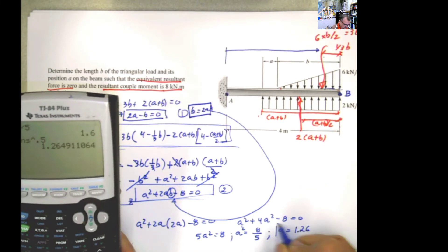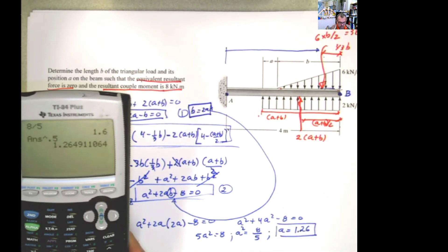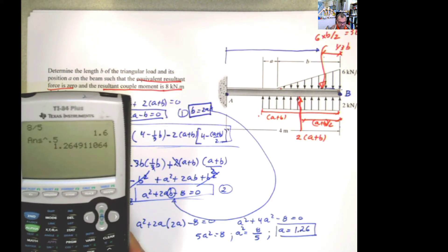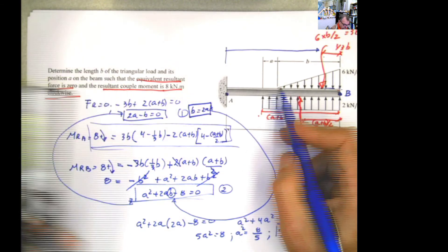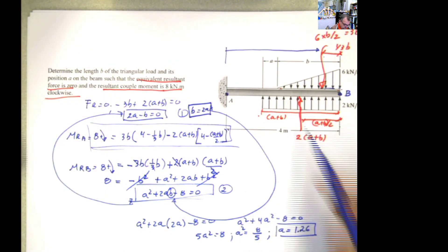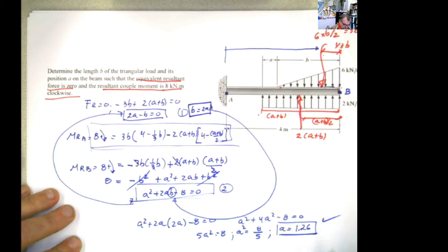Of course, whenever you have a square root, that could be positive or negative. Now keep in mind that the negative value is not possible. It's an absolute value. So 1.26 meters.